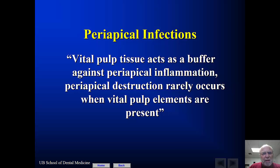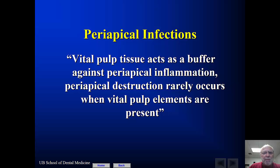An important thing to remember — and this becomes critical when trying to diagnose the two conditions — is that vital pulp tissue acts as a buffer against periapical inflammation. You cannot have an endodontic lesion or bone loss secondary to endodontic disease unless you have necrotic tissue in the canal. Periapical destruction rarely occurs when you have a vital pulp, and this is more common than not.